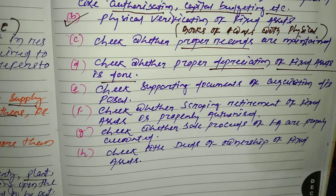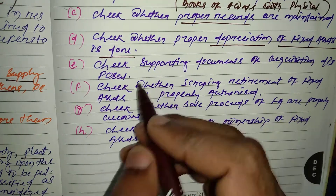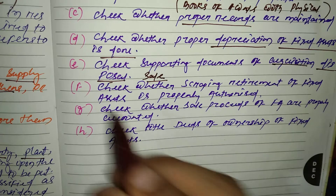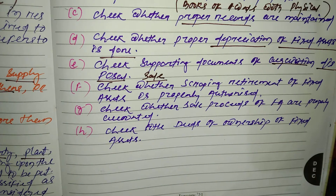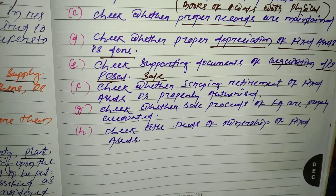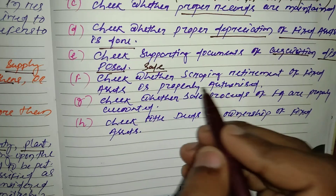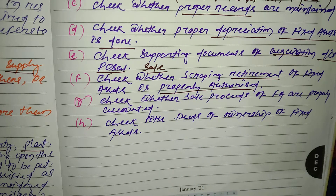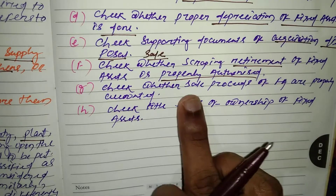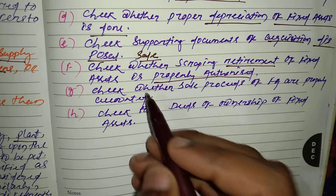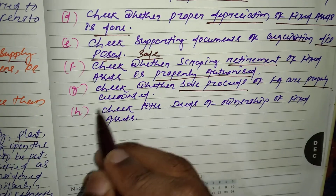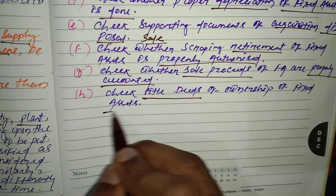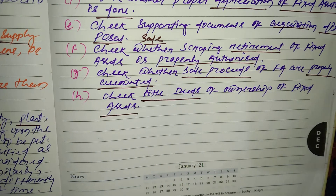The auditor needs to check whether proper depreciation of fixed assets has been charged. Then the auditor should check supporting documents for acquisition and disposal for authentication. The auditor also needs to check whether scrapping or retirement of fixed assets is properly authorized, and whether sale proceeds of fixed assets are properly accounted for in the books of accounts.